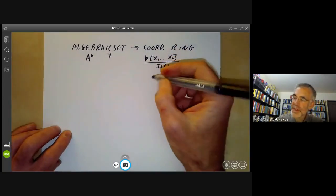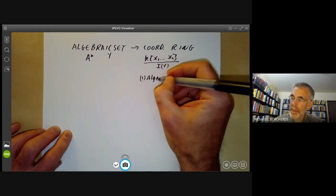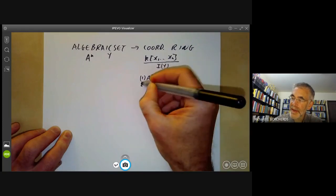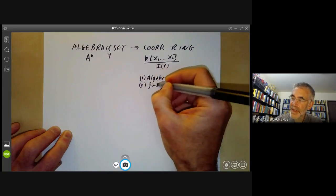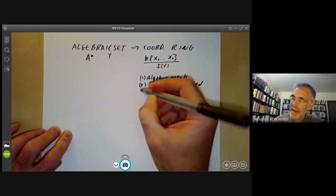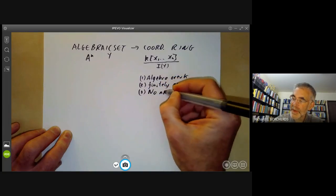This coordinate ring has three properties. First of all, it's an algebra over k. Secondly, it's finitely generated as an algebra. And third, a slightly more subtle property: it has no nilpotent elements.